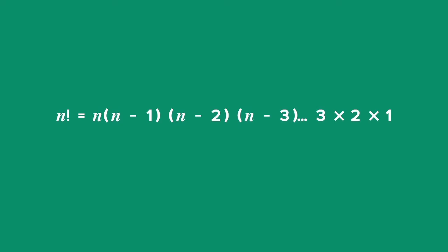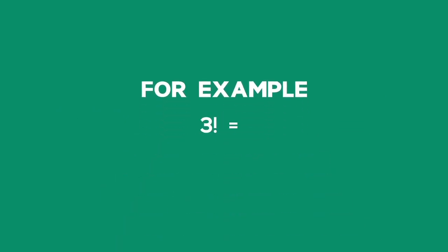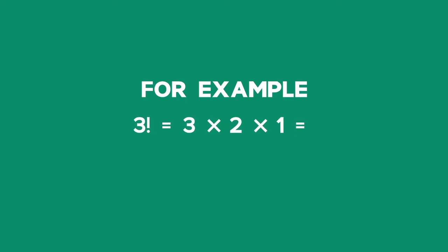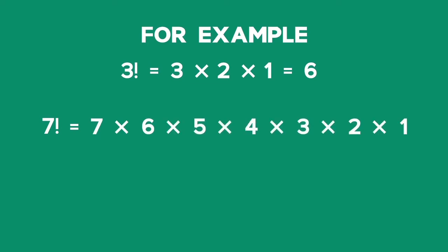While CAPS does not require the definition of a factorial, you are expected to apply the factorial calculations for exam purposes. For example, 3 factorial is equal to 3 times 2 times 1, which equals 6. 7 factorial equals 7 times 6 times 5 times 4 times 3 times 2 times 1, which equals 5040.